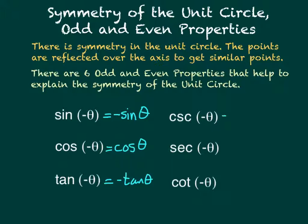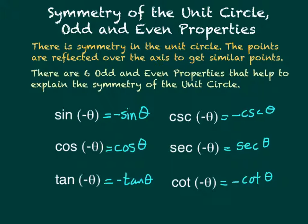Cosecant of negative theta is equal to negative cosecant of theta. So what this means is the cosine and secant functions are even, and the others are odd — they're odd functions because they have opposite signs.